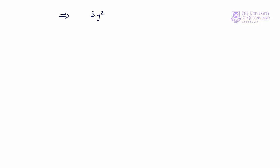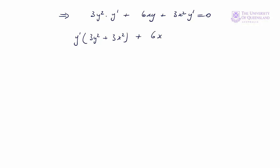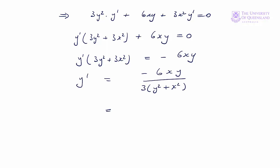Putting all those together: 3y²·y′ + 6xy + 3x²·y′ = 0. Collecting the y′ terms: y′·(3y² + 3x²) + 6xy = 0. Moving 6xy to the right-hand side and dividing through by (3y² + 3x²), we can simplify to obtain the final expression for y′.